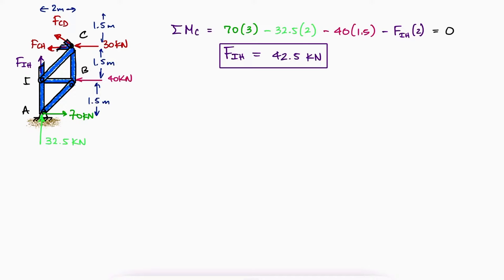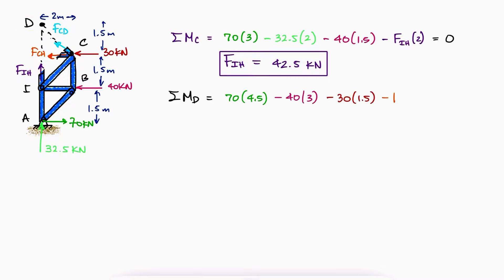Similarly, the line of action of internal forces DC and HI pass through D. So a sum of moments about D will only have FCH as a variable, and we can solve for it. Finally, we can use either the sum of forces in X or Y to find the third and last variable, FDC.